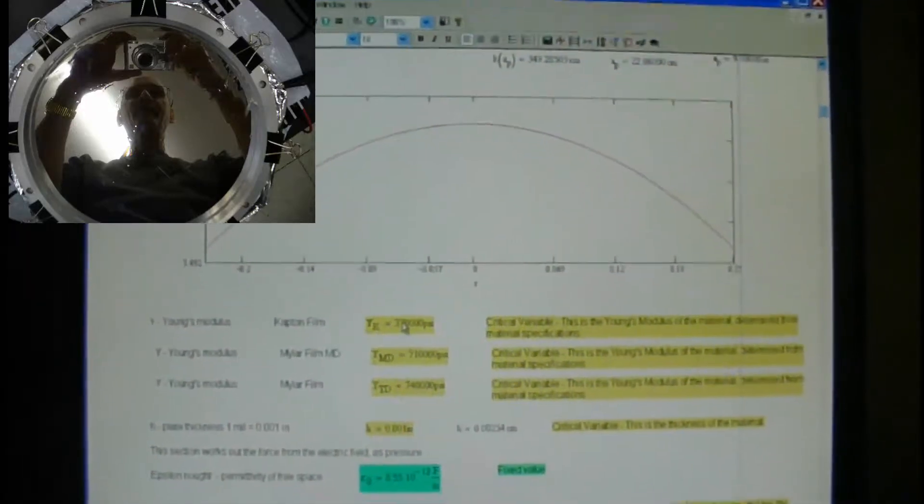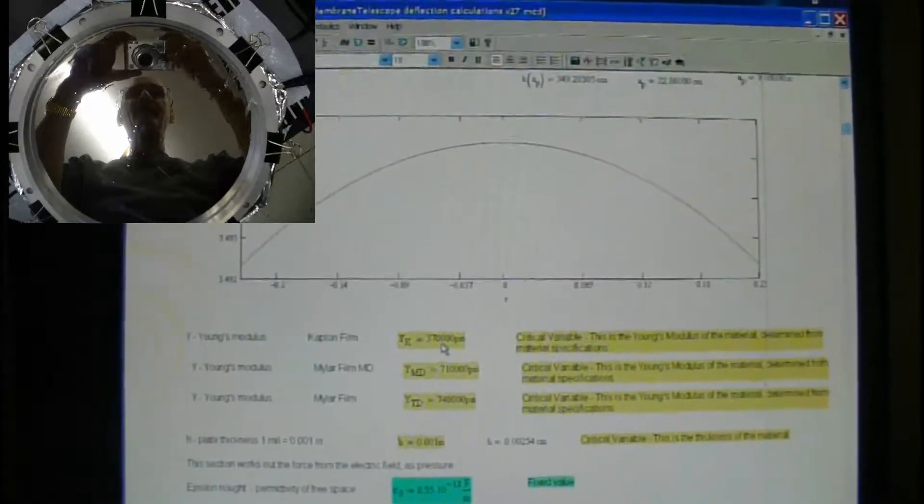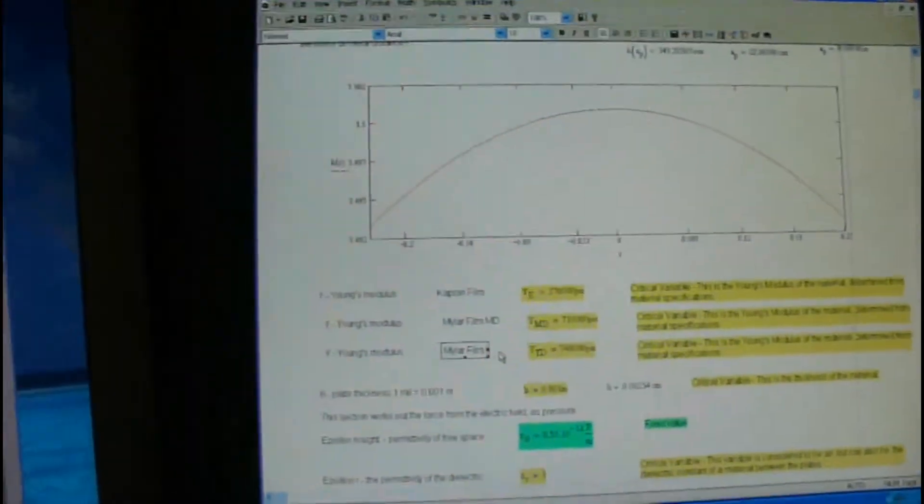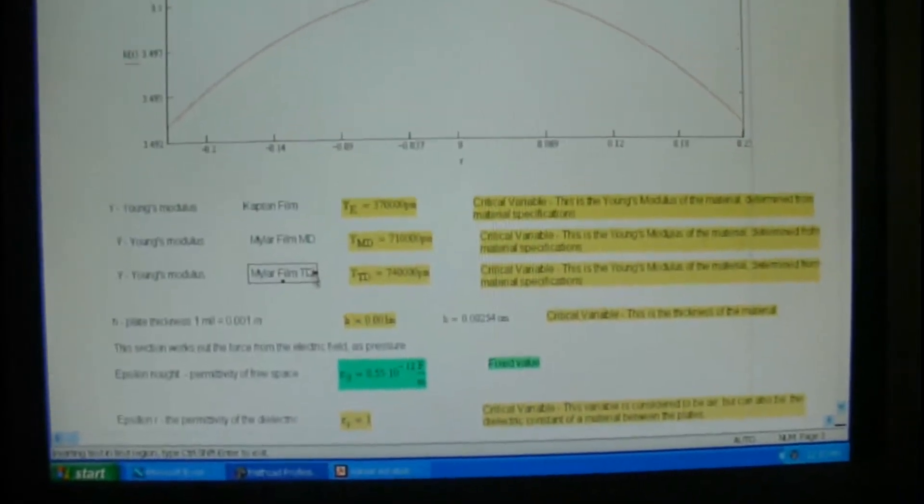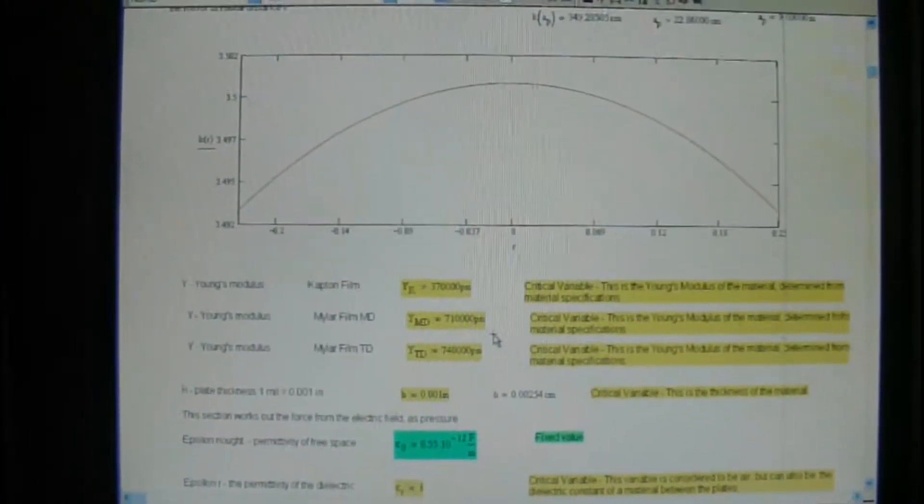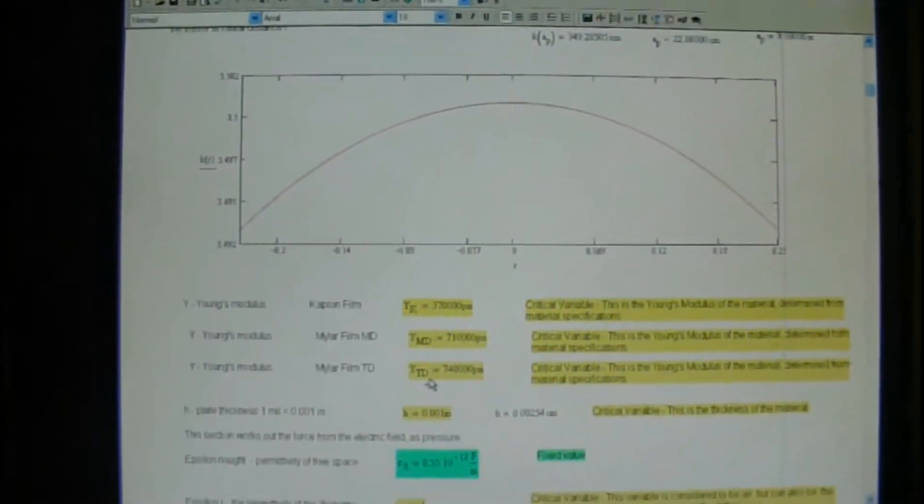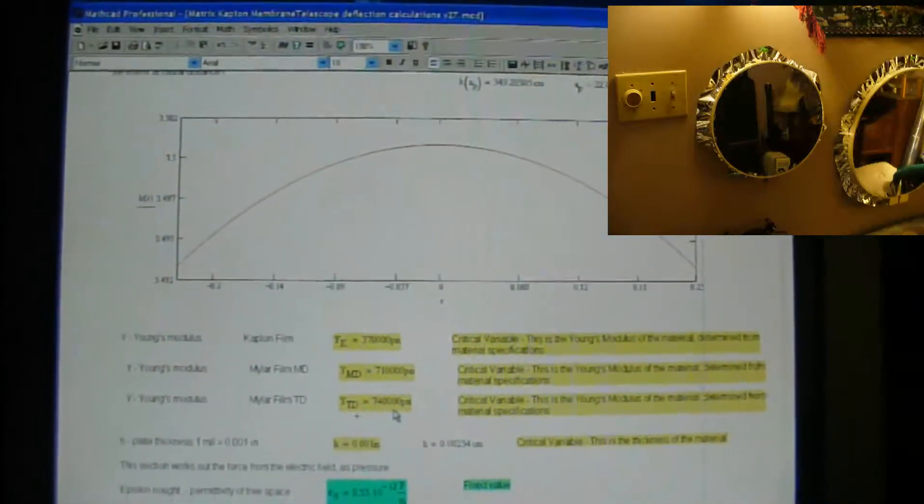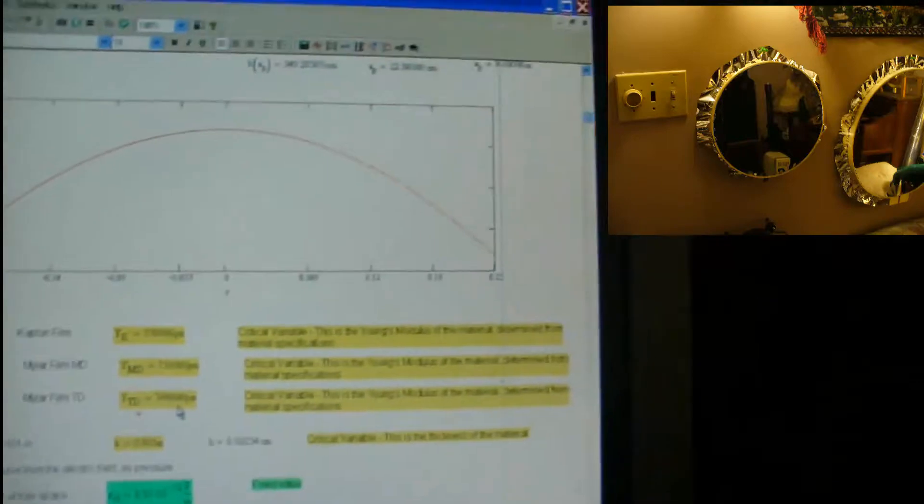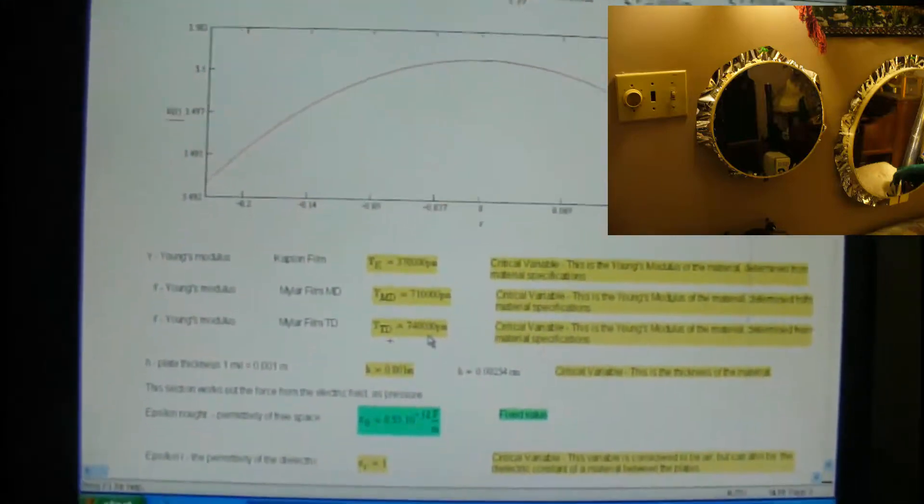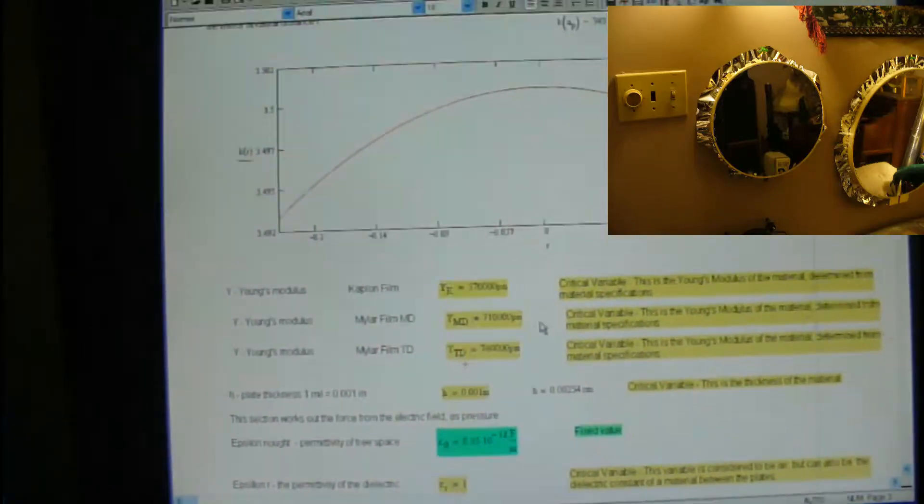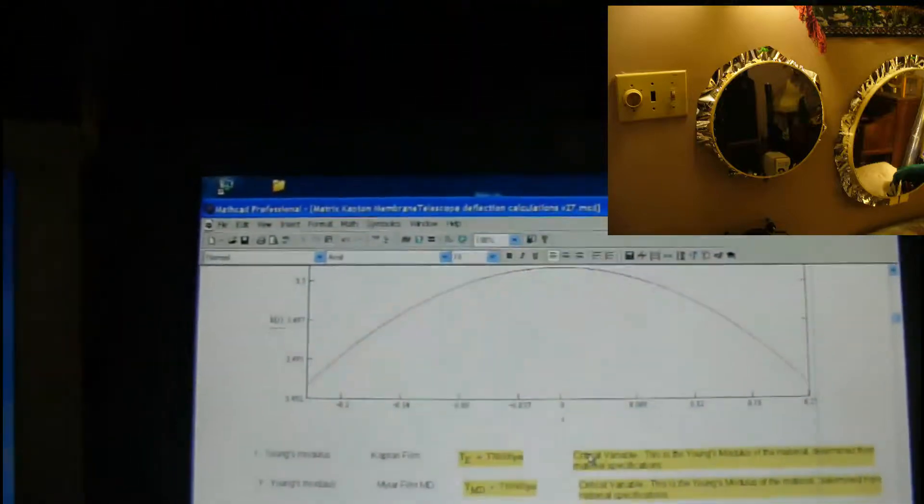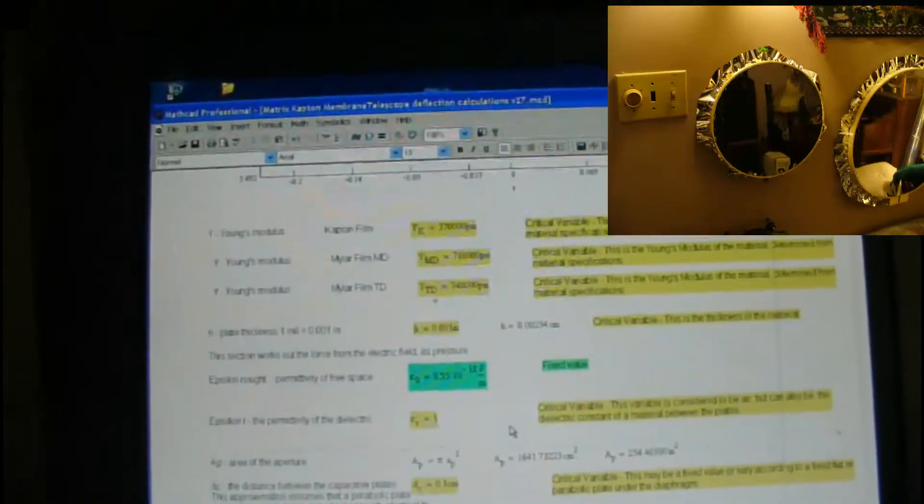Here's the Young's modulus for Kapton film is 37,000 PSI. And for mylar film, this is in the MD, and then this is mylar in the TD. I should mark that. Alright. So in the machine direction is 710,000 PSI, and in the transverse direction is 740,000. So that's the difference. Not much. 30 over, or 3 over 71 is probably about 5% difference. Young's modulus determines how much this material will expand in each of those directions. So if you can't get it to expand in both directions the same amount, then you're not going to have a good parabolic mirror to make a telescope out of.